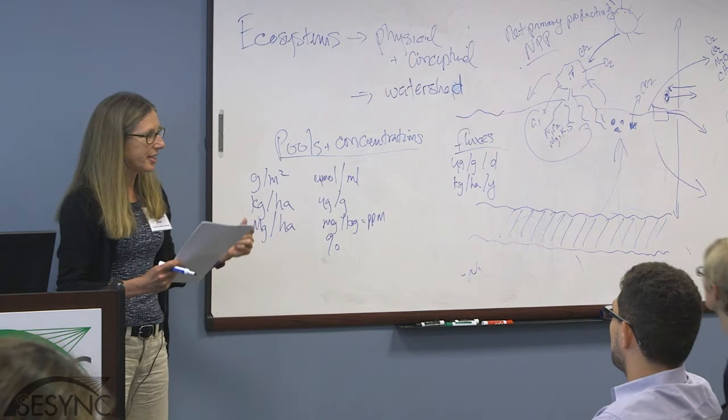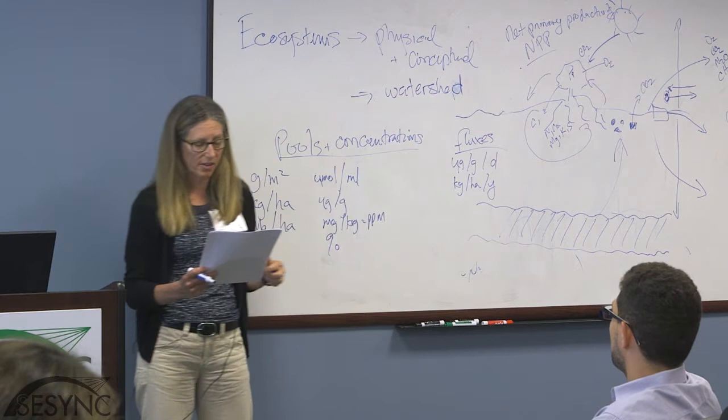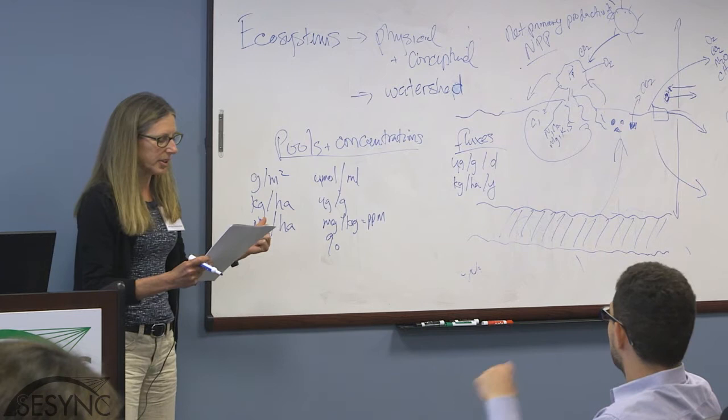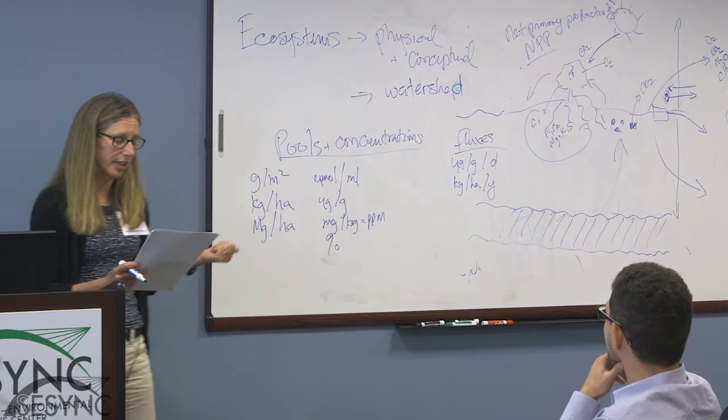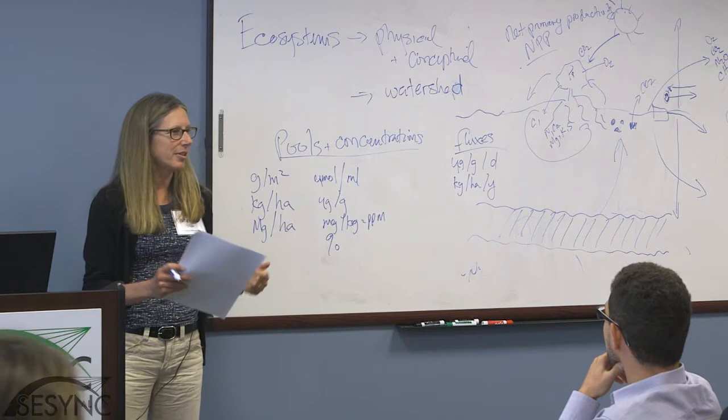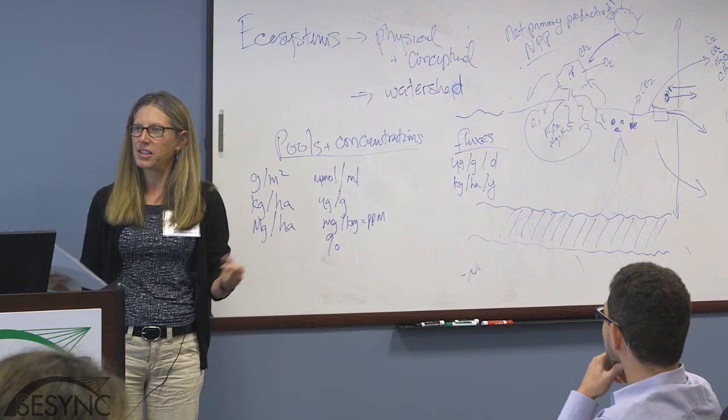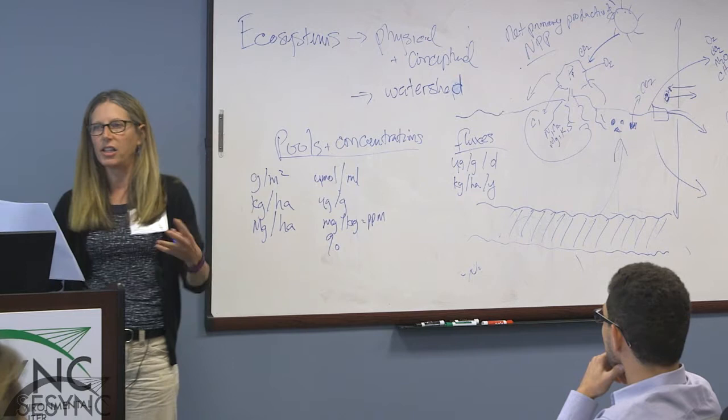Ecosystem ecology builds on the composition, structure, and behavior of populations and communities, ecophysiology, biometeorology, geology, geochemistry, atmospheric chemistry, physics, and evolutionary biology — because deep time matters. To do ecosystem ecology really well, you have to explore these other disciplines. Ecosystem ecology has tried hard and continues to branch out into other areas like social science, economics, and law.